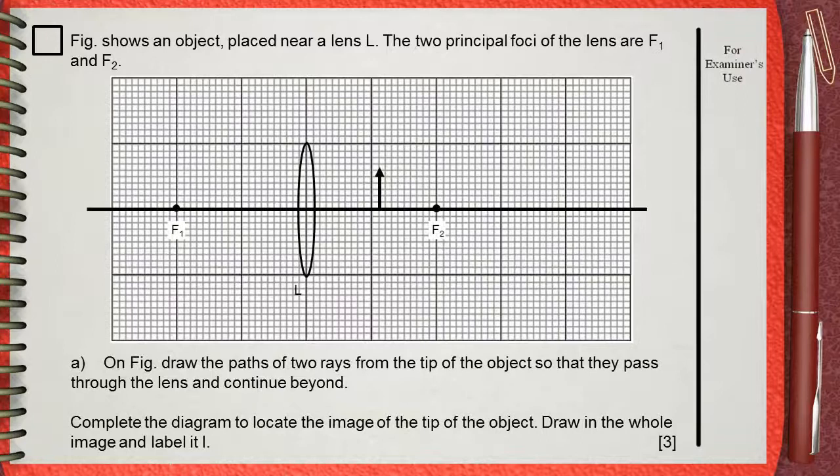Figure shows an object placed near a lens L. The two principal foci of the lens are F1 and F2.